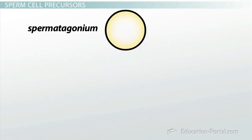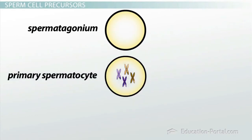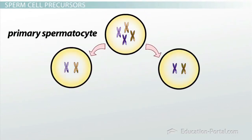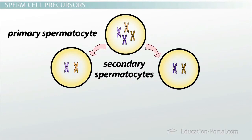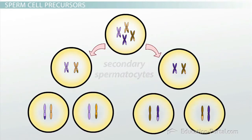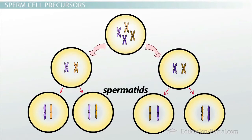Every day, somewhere around 25 million spermatogonia enter meiosis and become primary spermatocytes. After the first meiotic division, the cells double in number and are called secondary spermatocytes. Once the second meiotic division is completed, but before the haploid cells have had a chance to differentiate into actual sperm, the cells are called spermatids.